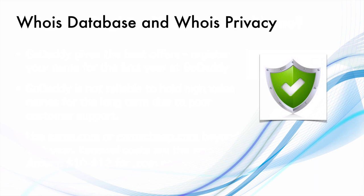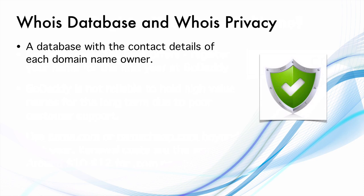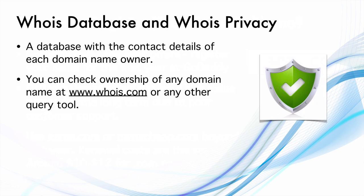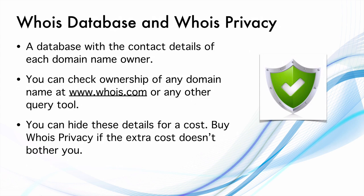Let's talk about the WHOIS database and WHOIS privacy. The WHOIS database contains the contact details of each and every domain owner. You can check the ownership of any domain name at whois.com or other query tools. There is an option to hide these details for a cost — the domain name registrar will put their own contact details instead of yours, so if someone looks up your domain on the WHOIS database, they will not see your email, phone number, and address. If you don't want to pay for WHOIS privacy, you can still give an unused email address and a phone number you don't use frequently, and put a forwarding mail address or office address there, so your personal details are not revealed.